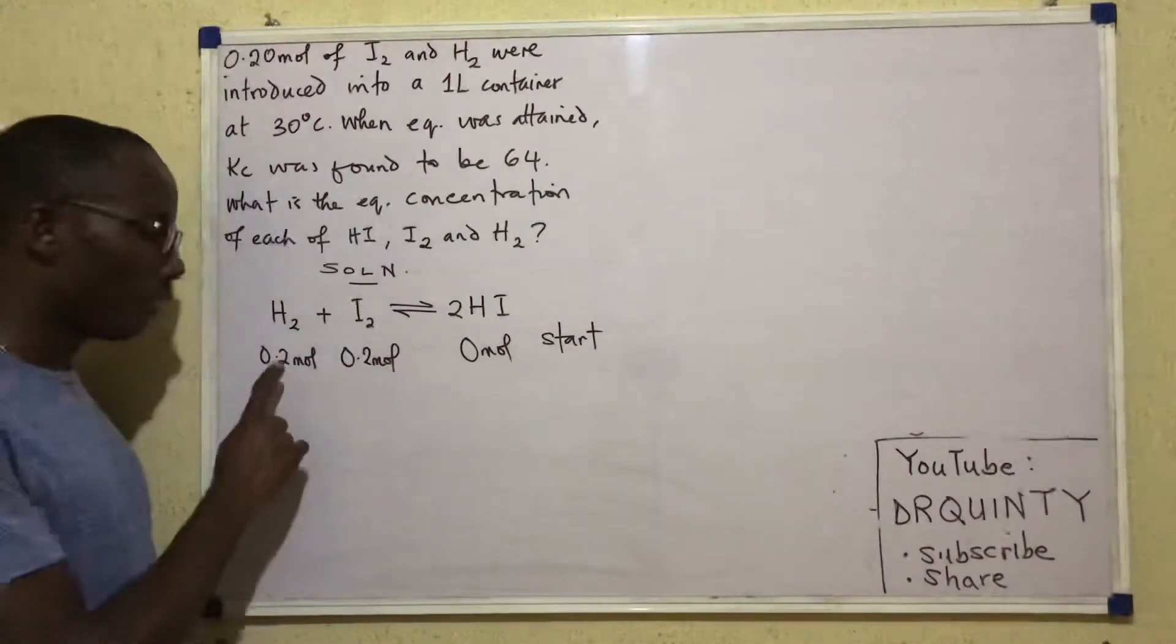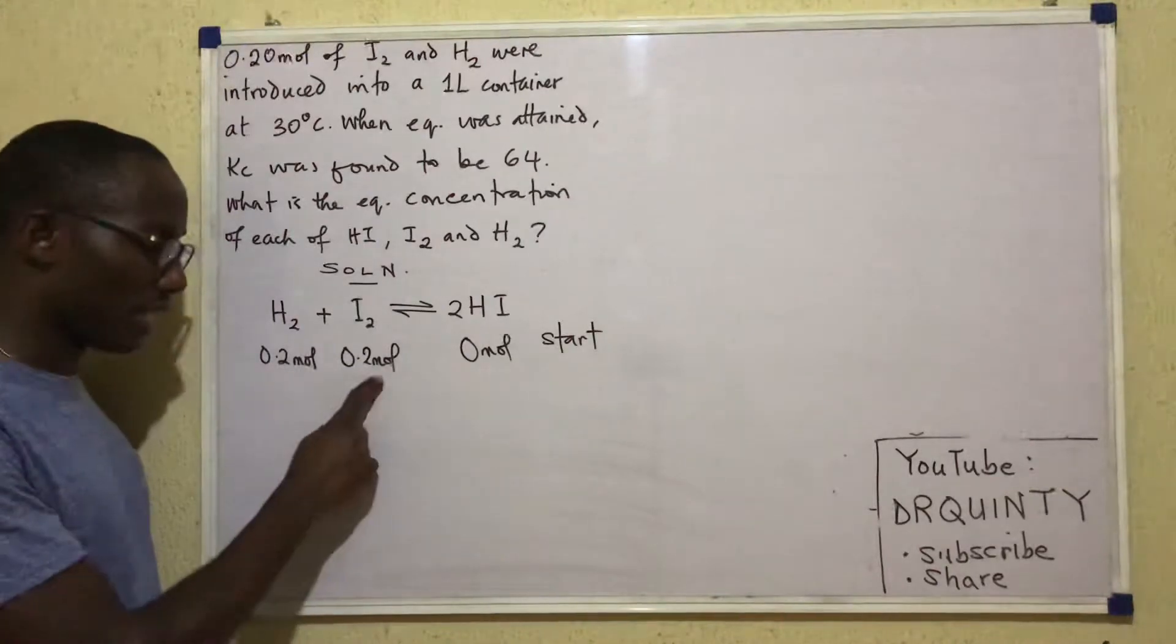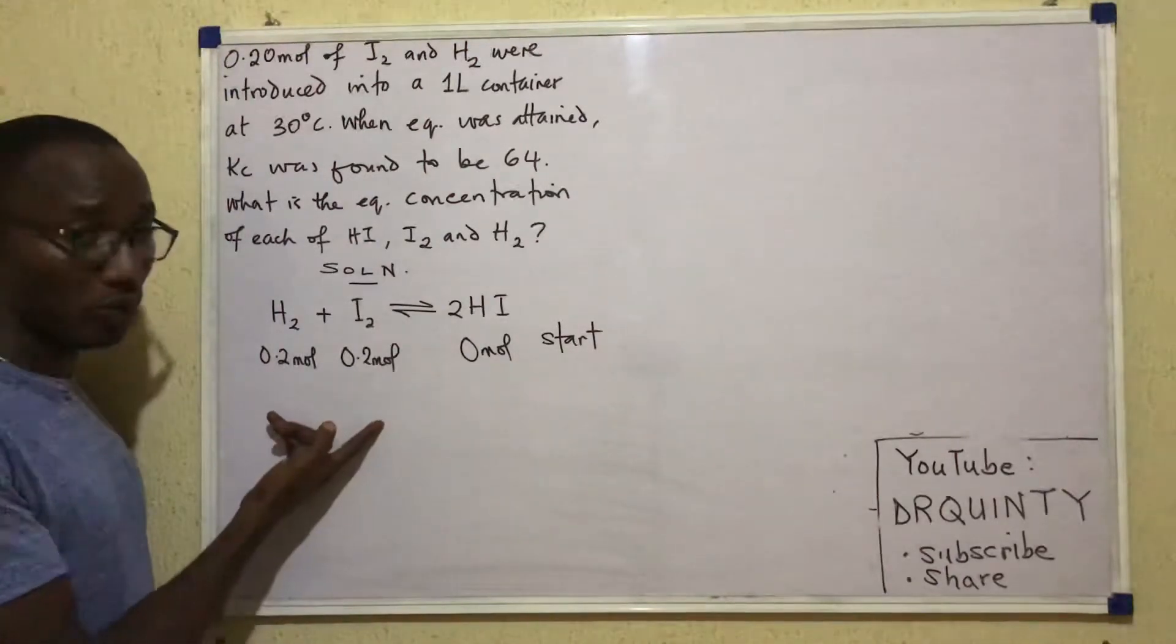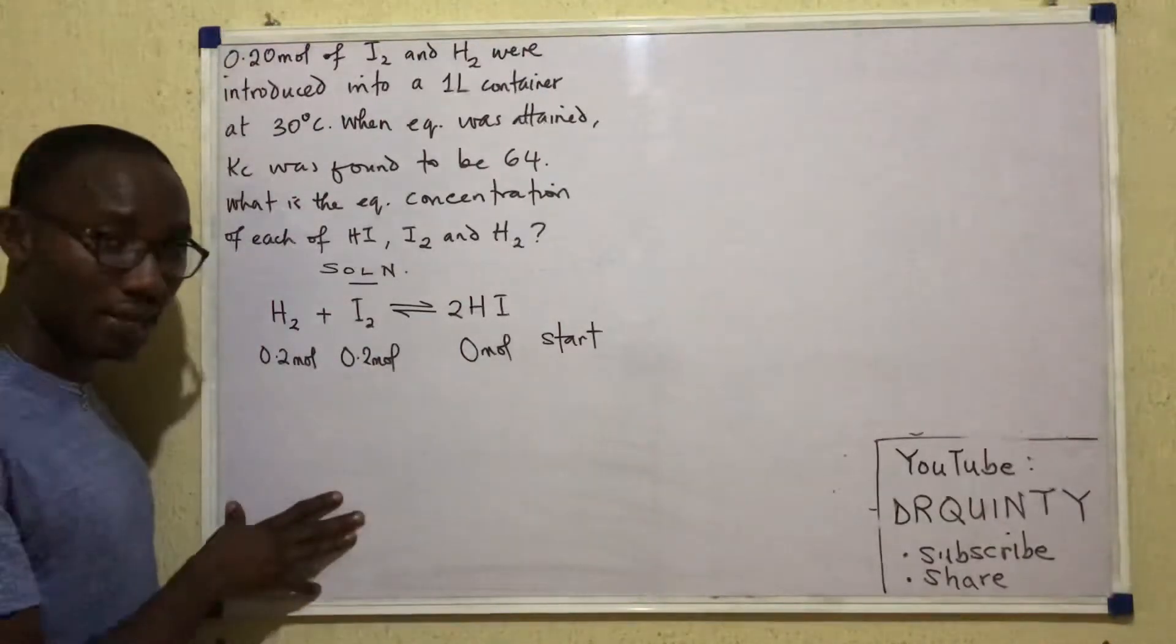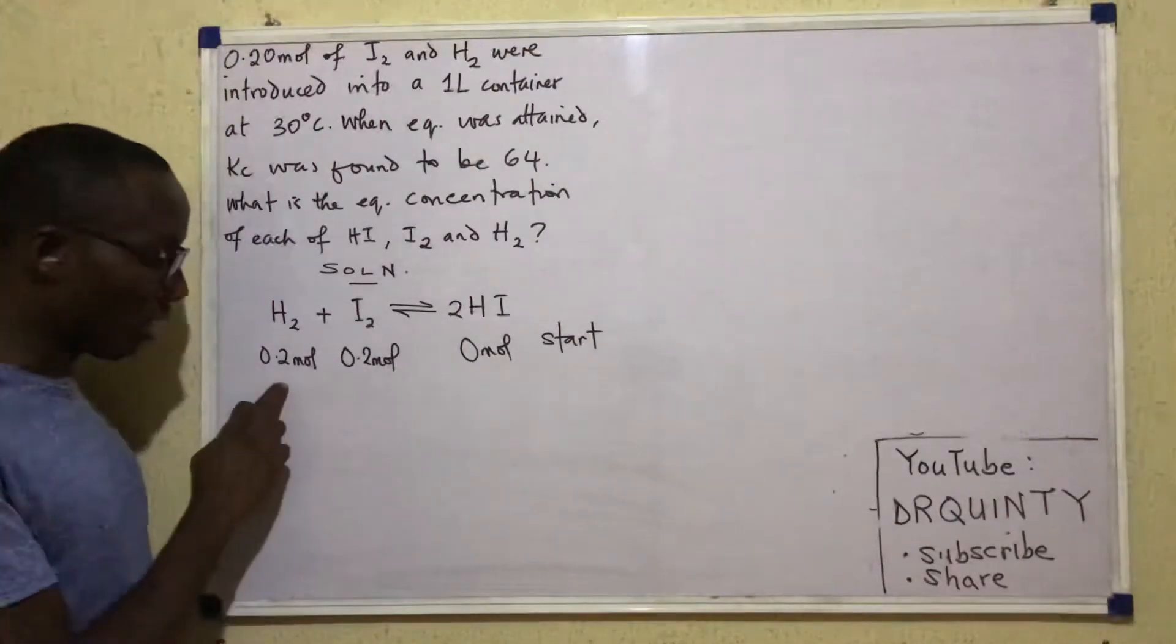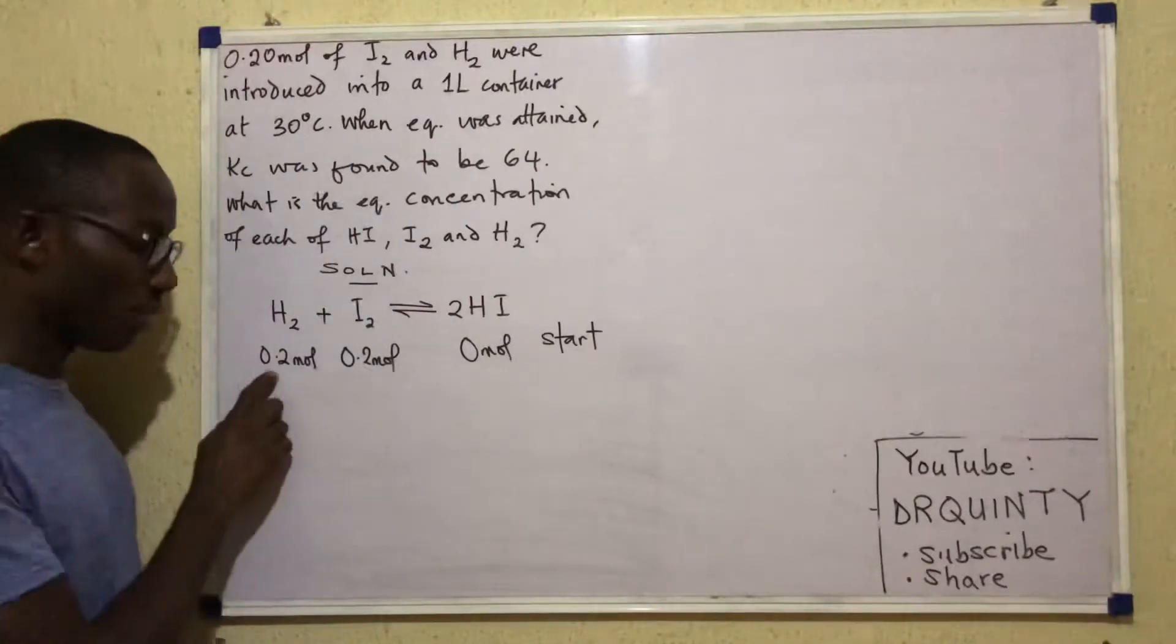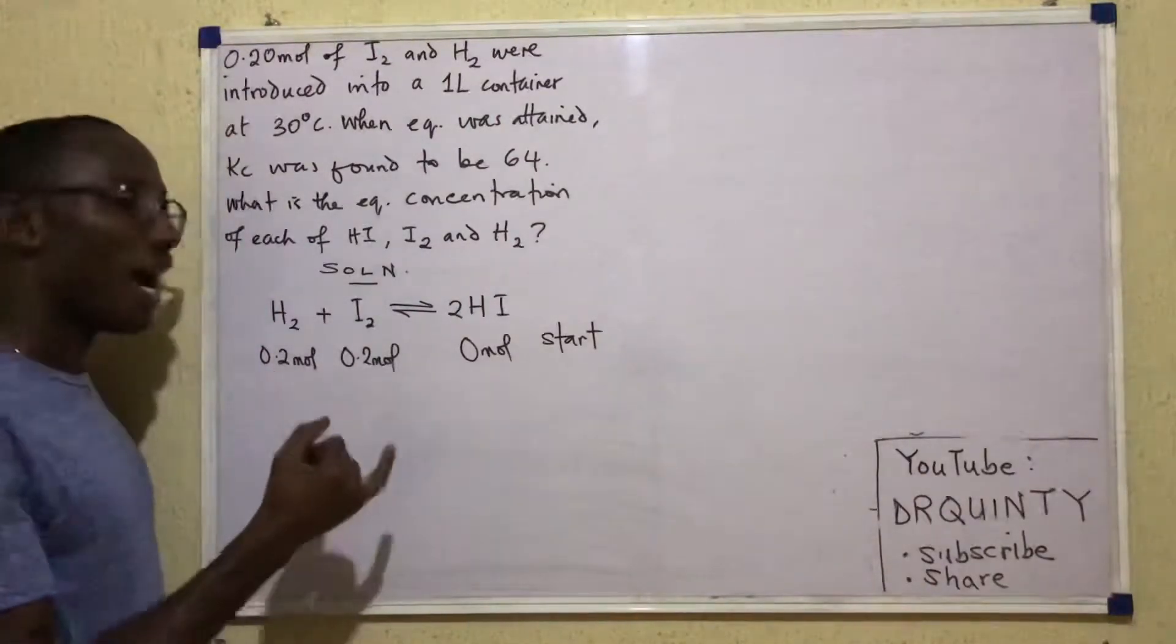whatever quantities of these guys would react would definitely be less than 0.2. All of them would not react, else there would not be anything like reversibility. So whatever amount reacted would be less than 0.2. And second,